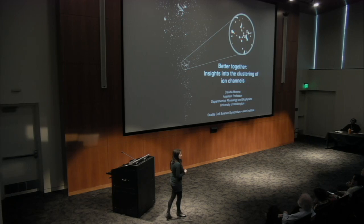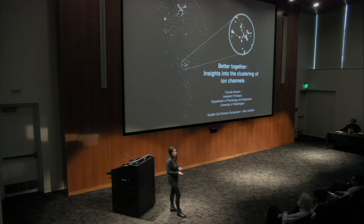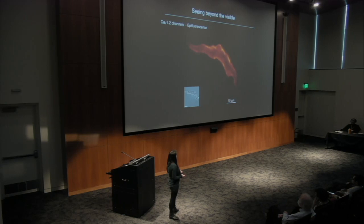Super resolution microscopy has changed the way we see proteins, and ion channels are not the exception. Before, when we looked at the organization of ion channels through regular epifluorescence microscopes, we saw a diffuse ring around the cell that gave the impression that ion channels organize in a homogeneous way in the plasma membrane.